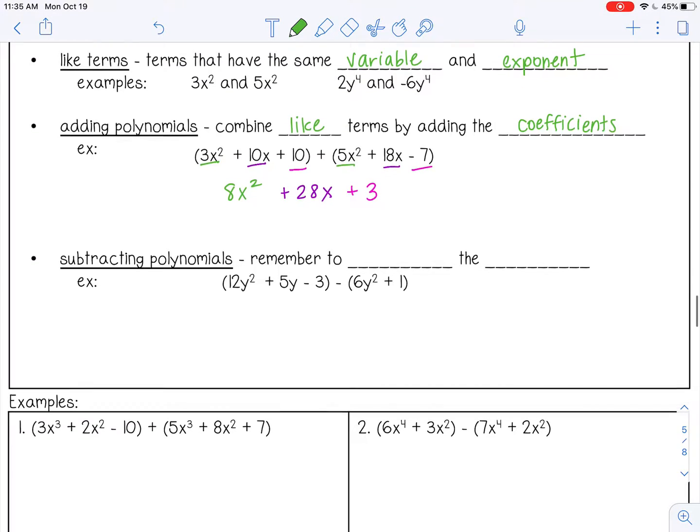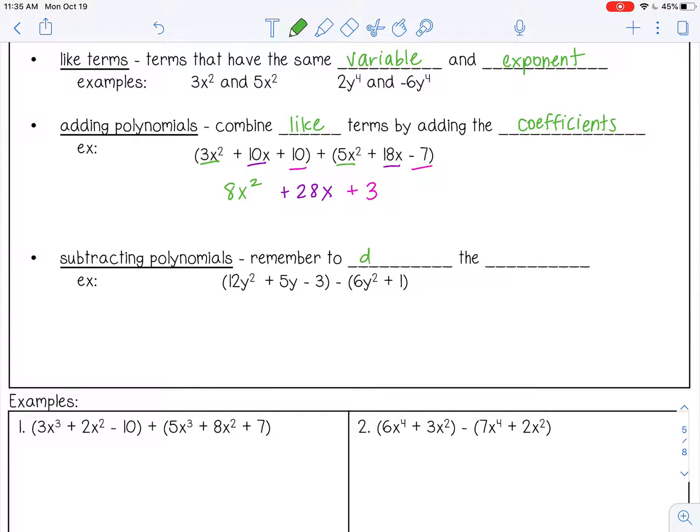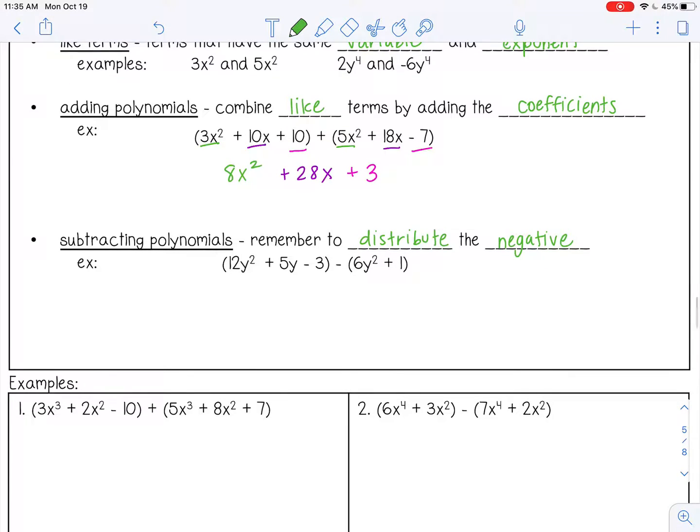To subtract polynomials, you want to make sure that you distribute the negative sign that's in between the two polynomials. And then you're going to combine like terms. So let's distribute this negative first. So I'm going to just bring this down. And then this I'm going to distribute to both of these terms. Because it's really like a negative 1 multiplied, so I'm distributing that negative 1 inside the parentheses.